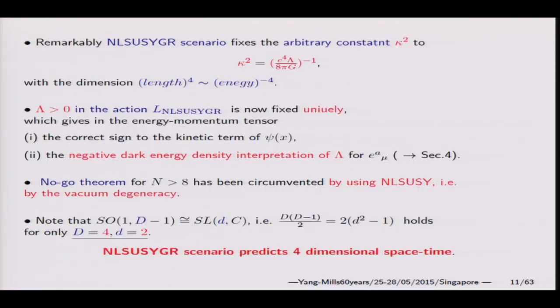We calculate it by using the unified vierbein W. This is the empty space. Now, non-linear SUSY has a dimensional constant. However, the dimensional constant is fixed to λ over G. Lambda is the cosmological term, G is the Newtonian constant.